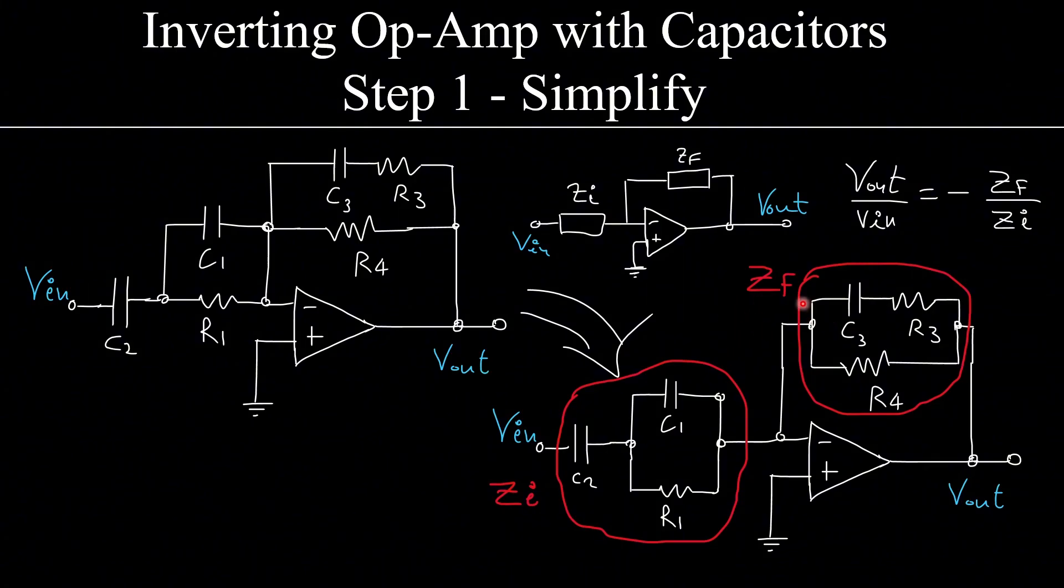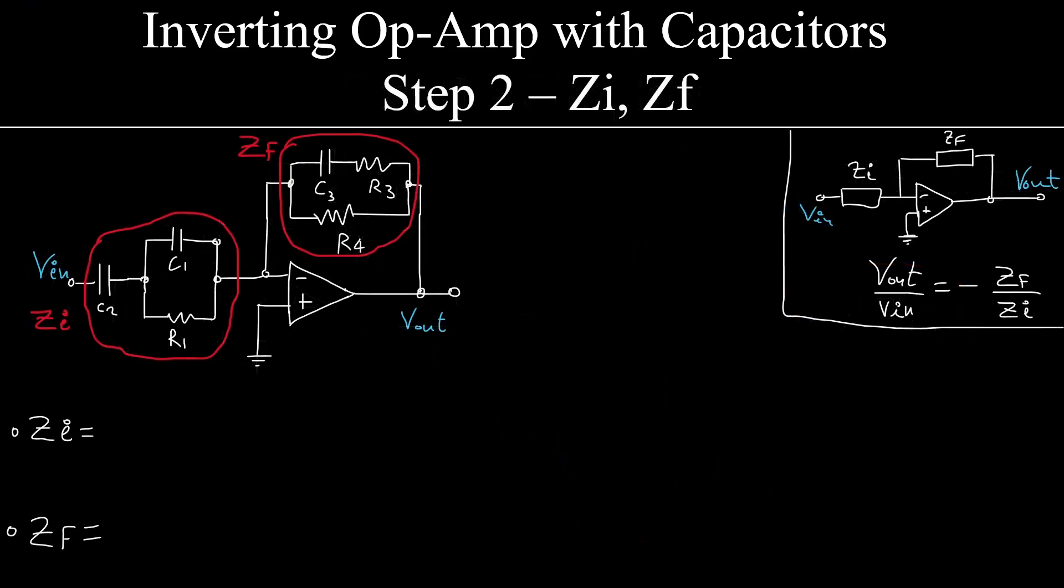Because now I can clearly see that this is Zf, the impedance tied between the inverting input and the output, and this Zi between the input and the inverting input.